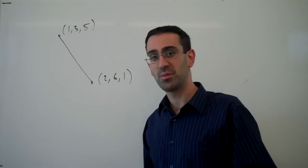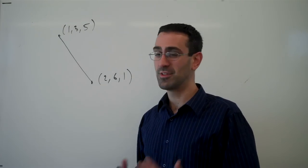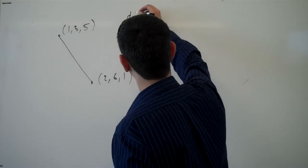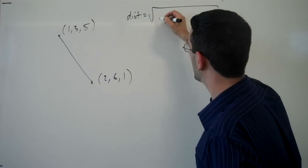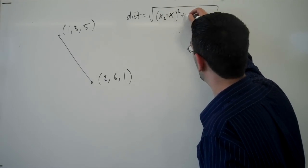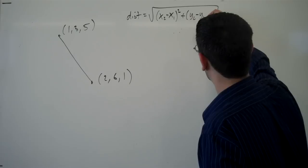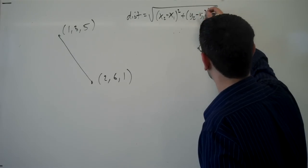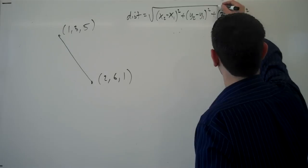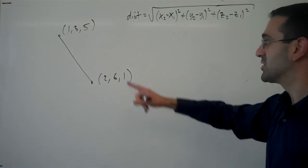It turns out that the distance formula we had from two dimensions extends very nicely into three dimensions, and the distance between points is the square root of the difference between the x's squared, the difference between the y's squared, and extending that into three dimensions plus the difference of the z-coordinate squared.